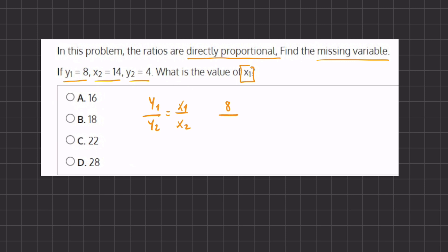For x1 this is going to be our missing variable and x2 is 14.